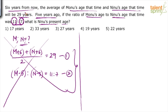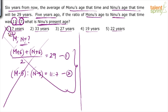Five years ago their ages were multiples of 11 and 7 respectively. We need Nino's present age from the options. Option 1 says 17 — five years ago that's 12. Is 12 a multiple of 7? No — eliminated. Option 2 says 33 — five years ago that's 28. Is 28 a multiple of 7? Yes — option 2 is possible. But we can't confirm yet; we need to verify the other conditions.